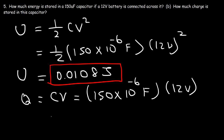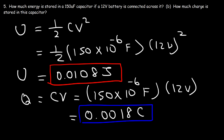So this too is a small number — it's 0.0018 coulombs. Most capacitors of a standard size usually fall around this range.